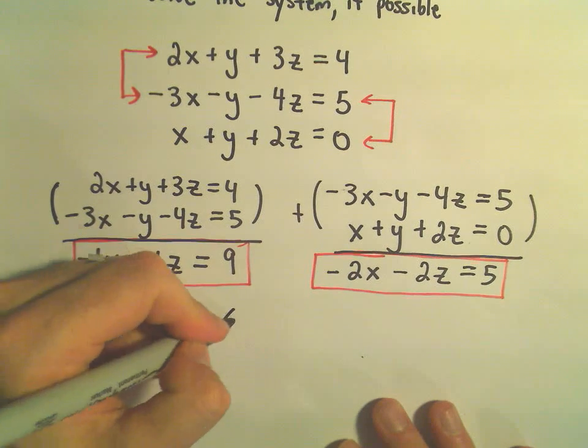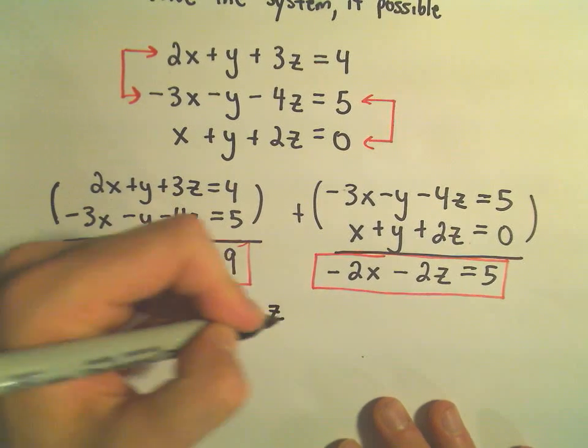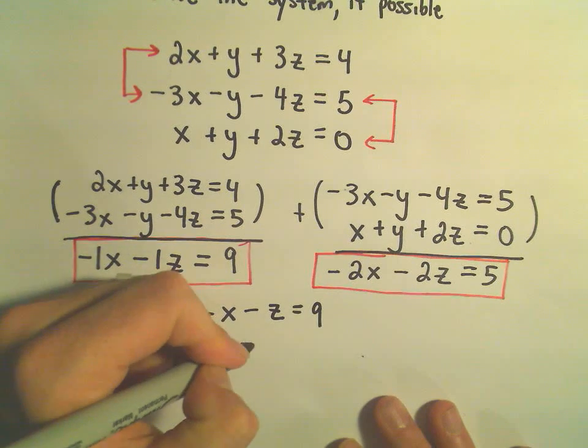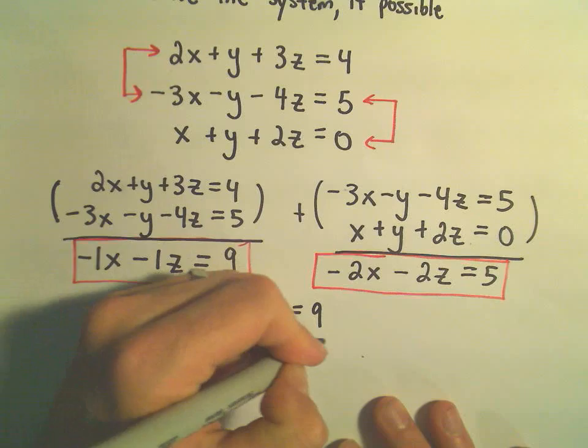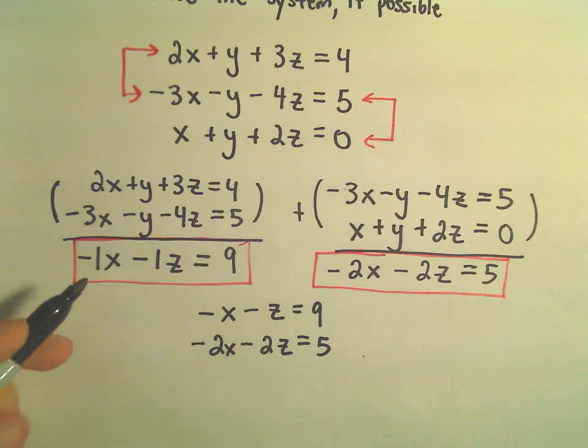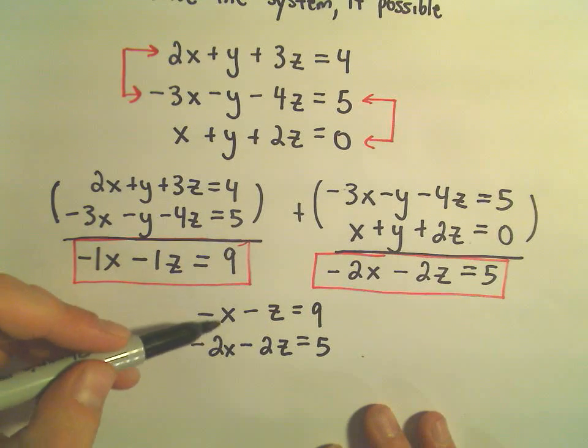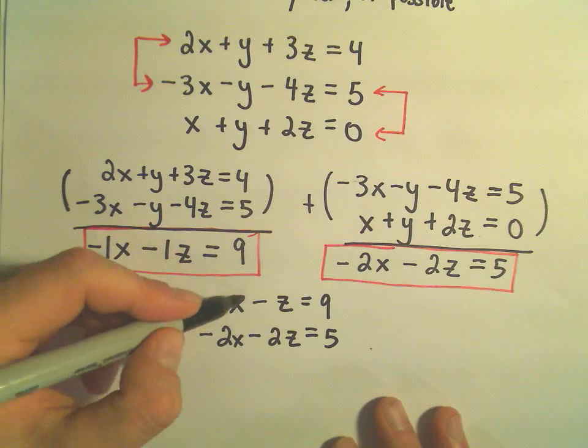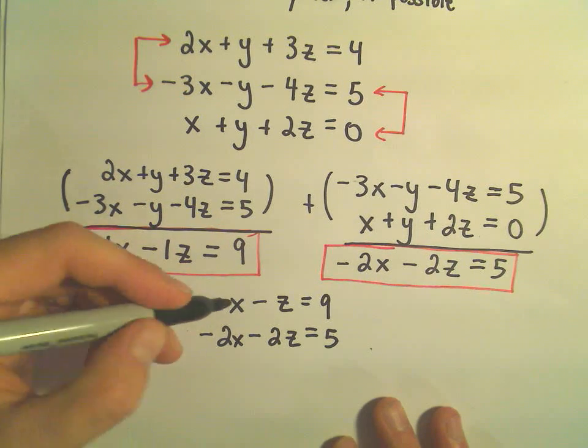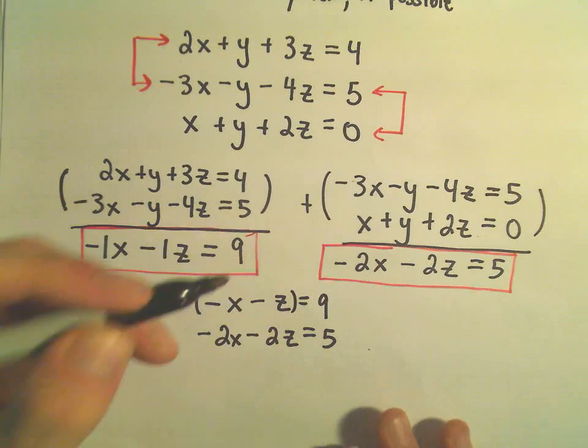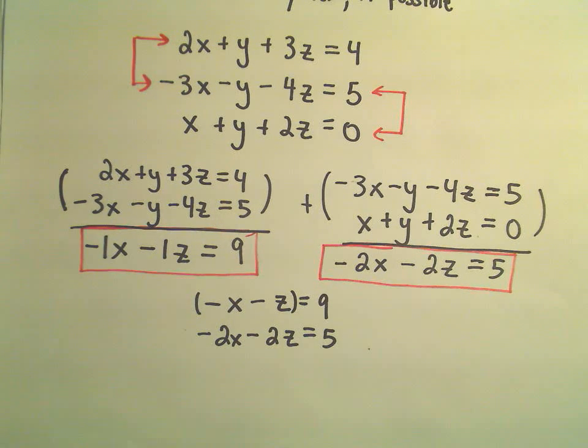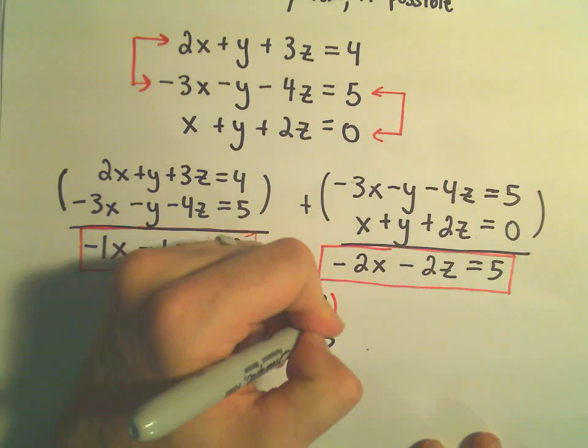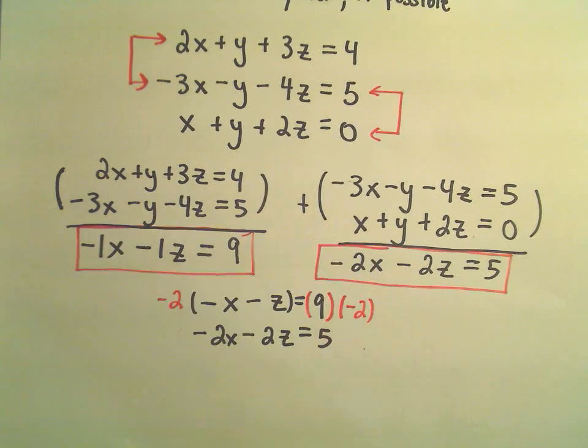So, we've got negative x minus z equals 9. And then we have negative 2x minus 2z equals 5. If we want to try to get the x's to cancel out, for example, we've got a negative 2x. If we had a positive 2x, then those would cancel out. So, to get my positive 2x in my top row, I would have to multiply both sides by negative 2.